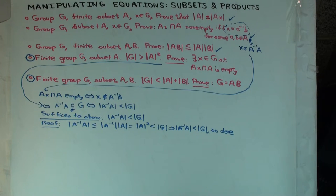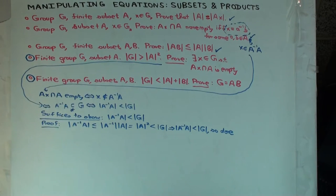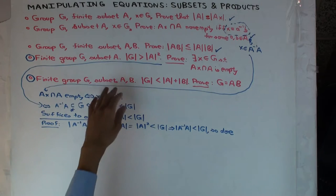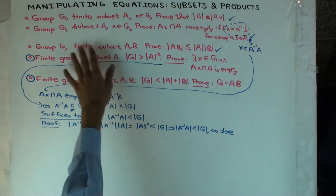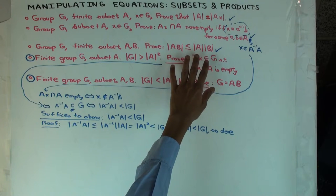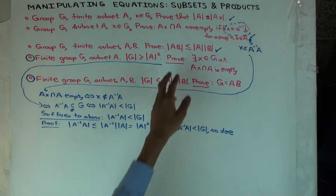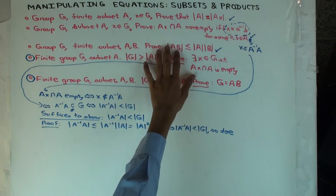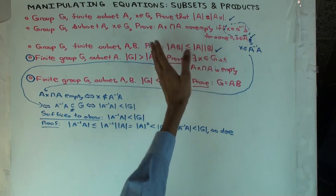Let's look at the next one. It says: if the size of G is less than the sum of the size of A and B, then G equals A times B. This is sort of an opposite result. The third exercise says if A and B are too small — if the product of their sizes is less than the size of G — the product cannot be G. This exercise says if A and B are quite big, so the sum of their sizes is already bigger than the size of G, then G is actually the product.